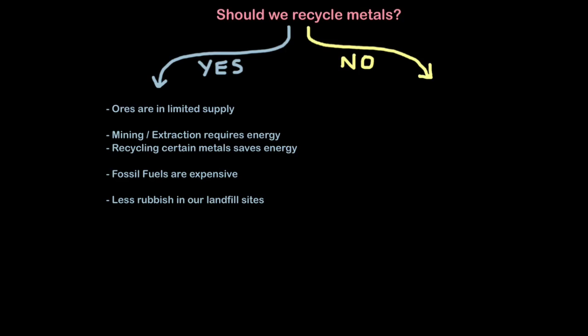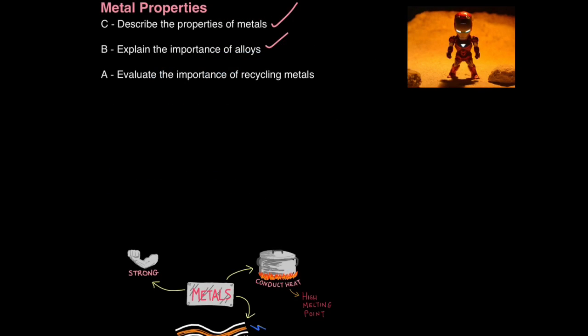So what possible objection could there be? Well, recycling also costs money. You have to collect the metals, transport the metals, sort them out and then process them. Now this may seem like an imbalanced argument, but one thing to consider is it really depends on the type of metal you are recycling, whether you should actually bother doing it or not. Copper and aluminium are quite expensive to extract because we use electrolysis to purify them. They are also, especially copper, in limited supply so it's very important we recycle those metals. But that's not necessarily true for all metals. And that's how you evaluate the importance of recycling metals.